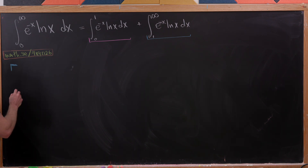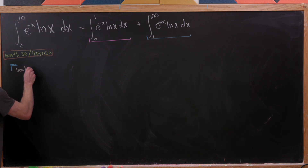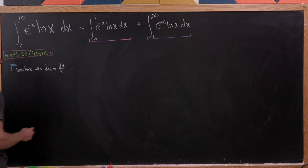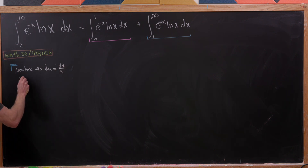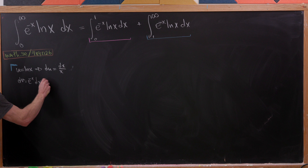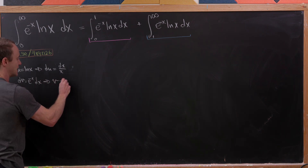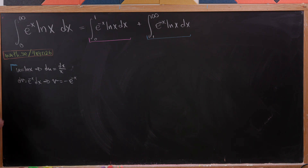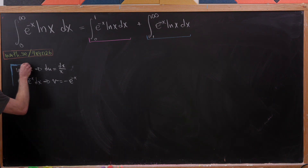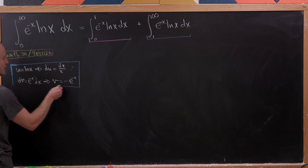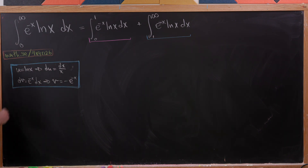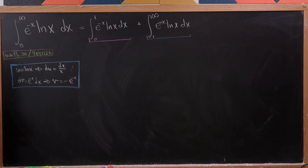For the blue part, we set u equal to the natural log of x, which makes du equal to dx over x. And we set dv equal to e to the minus x dx, making v equal to minus e to the minus x. These are fairly obvious choices because we know how to take the antiderivative of e to the minus x easily, while the antiderivative of the natural log is more complicated.